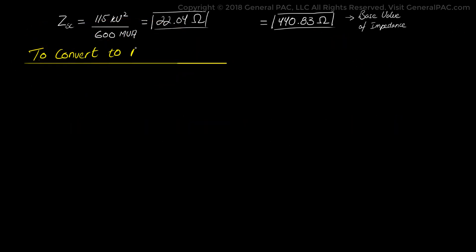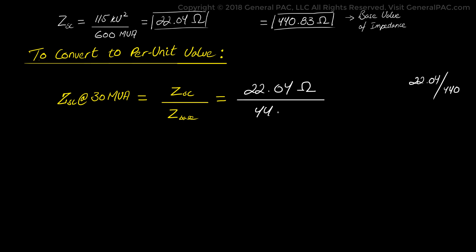To convert that to the per unit value we simply divide this 22.04 ohms by the base impedance value of 440 ohms that we calculated earlier. So the per unit value of the short circuit impedance at 30 MVA is equal to short circuit impedance divided by the base value of the impedance. That is 22.04 ohms divided by 440.83 ohms which conveniently gives us 0.05 per unit.